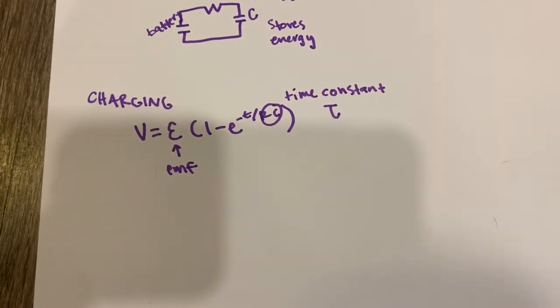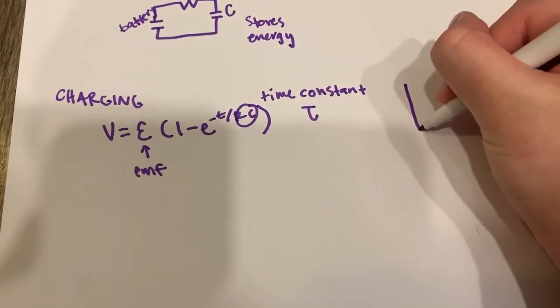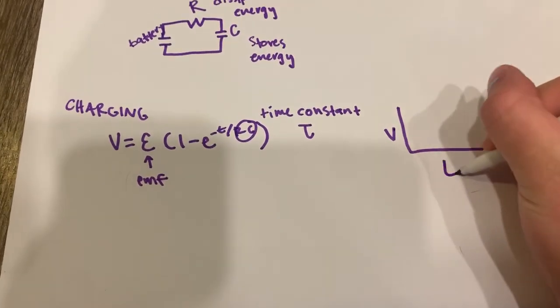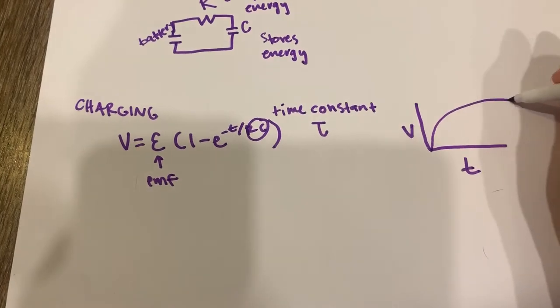And so if we were to graph this equation and we're looking at voltage over time, then it's going to look something like that.